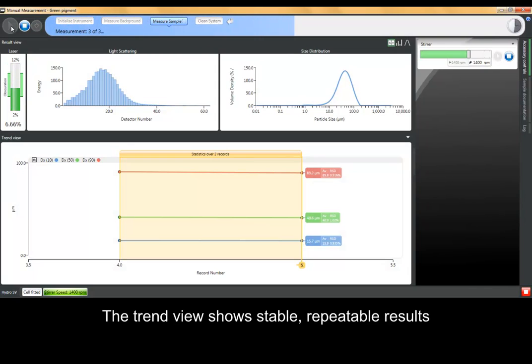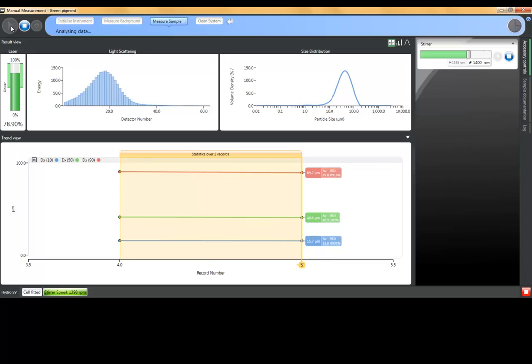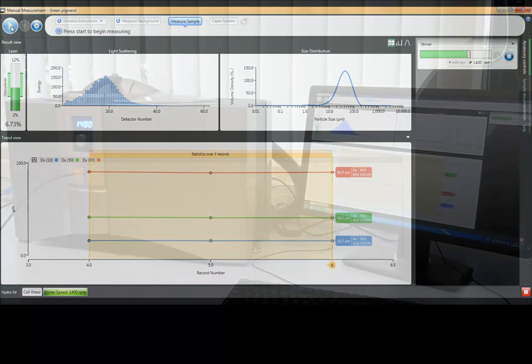The repeat measurements that we have made are built up into a trend view. And this shows stable repeatable results indicating that this green pigment sample is well dispersed and suspended on the Hydro SV.